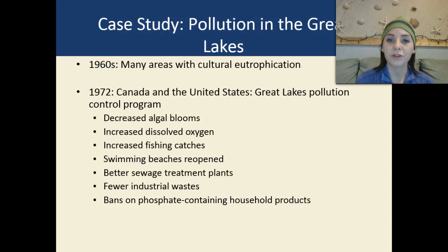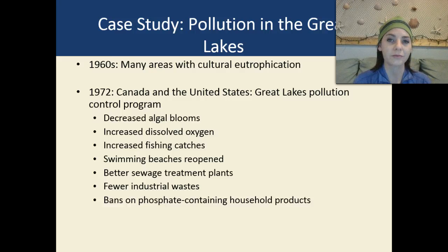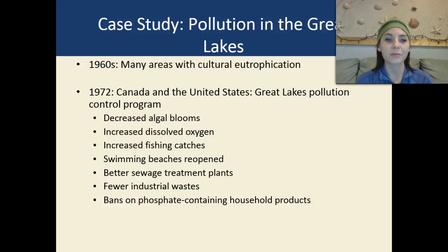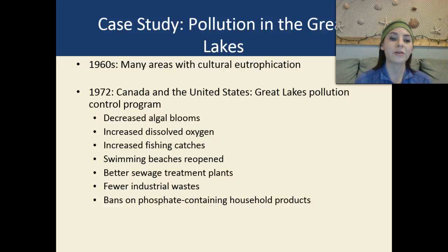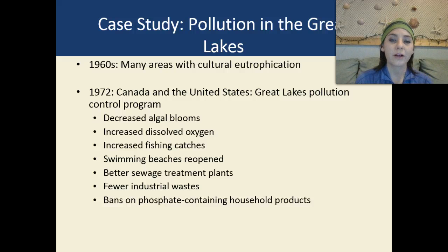Looking at the case study of pollution in the Great Lakes: in the 1960s, there were many areas with cultural eutrophication. In 1972, Canada and the United States came up with the Great Lakes Pollution Control Program, and it was very effective. It decreased algal blooms, increased dissolved oxygen content, increased fishing catches, reopened swimming beaches, put in better sewage treatment plants, reduced industrial waste releases into the water, and established bans on phosphate-containing household products.